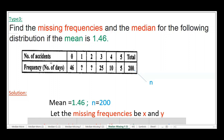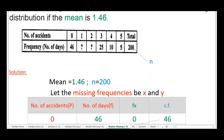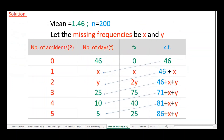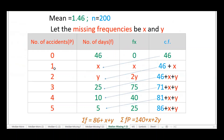The table shows number of accidents (p) and number of days (frequency). Here 46 days had 0 accidents, and there are two missing frequency values x and y. The total number of days n equals 200. Write the data column-wise: number of accidents 0, 1, 2, 3, and so on, with corresponding frequencies, where x and y are the missing values.